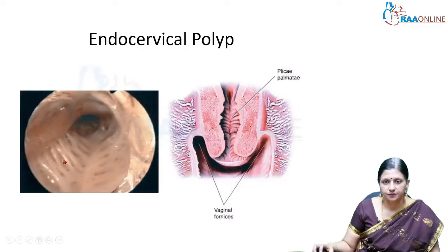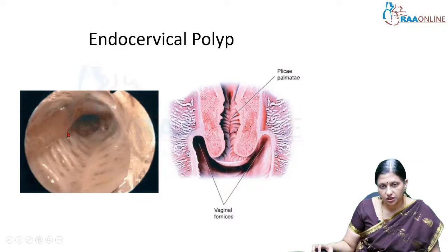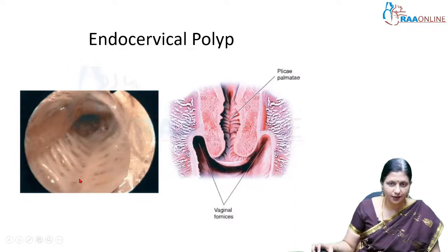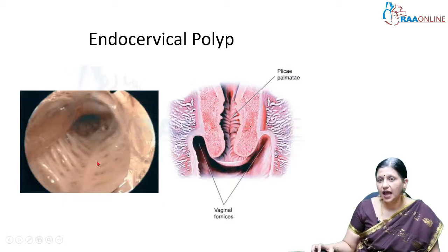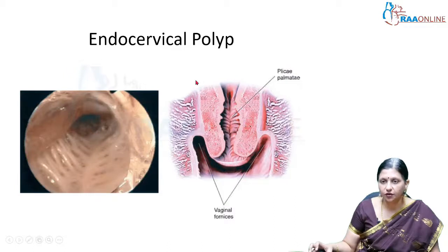Coming to lesions inside the cervix: we can see a tongue-like projection of mucosa hanging in the endocervical canal, which has been identified by plica palmitae and arborvitae. This is a pseudo-cervical polyp because it is seen hanging from the internal os.